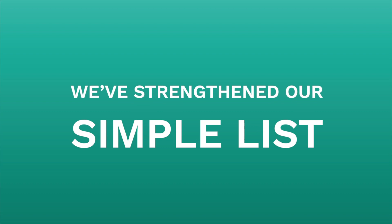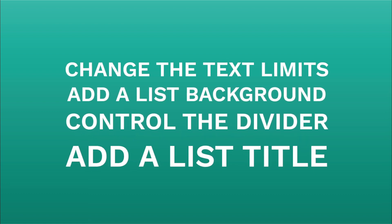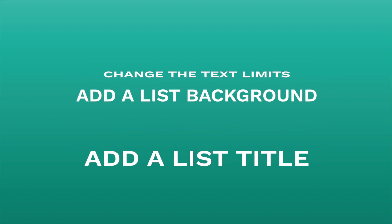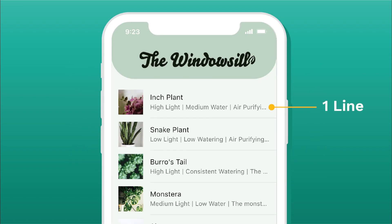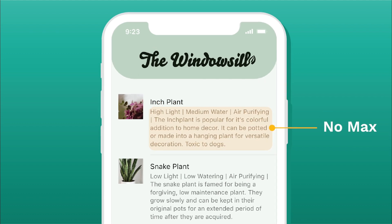Let's start off with our simple list because we've updated a ton of different things, including background, text limits, and list headers. Starting off, you can do one line of text today. Now you can do two lines of text as well as no max.